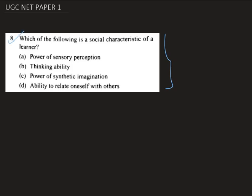In this question, we are asked which of the following is a social characteristic of a learner? We are given four options. The first option says power of sensory perception. The second one is thinking ability. The third one is power of synthetic imagination. And the last one is ability to relate oneself with others.